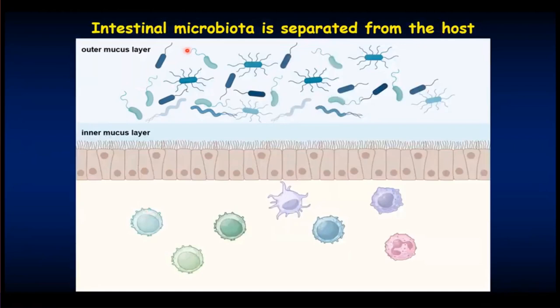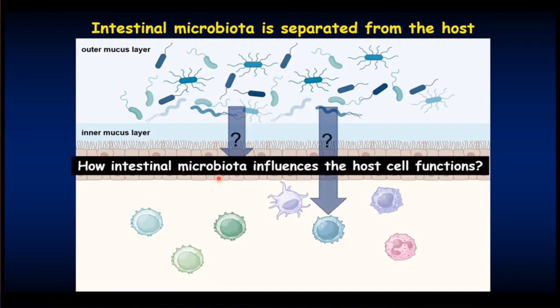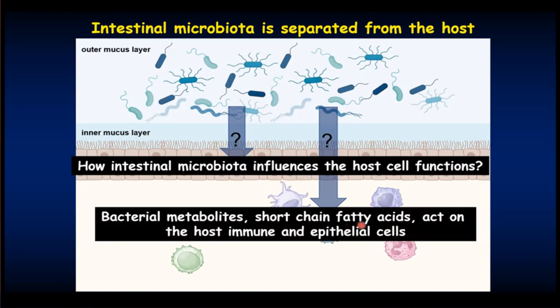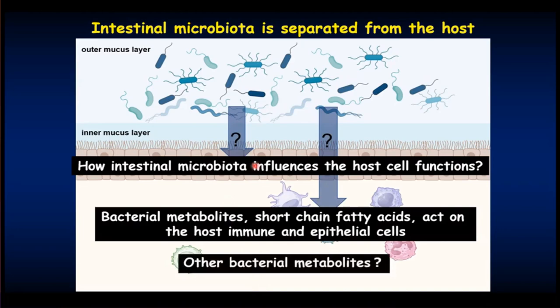Intestinal microbiota are present in the intestinal lumen without directly attaching to host cells. This kind of separation is required for the maintenance of intestinal homeostasis. All of you know that intestinal microbiota influence host cell functions. In this respect, bacterial metabolites, particularly short-chain fatty acids, are well known to act on host immune or epithelial cells. We wondered if other bacterial metabolites also act on immune cells.